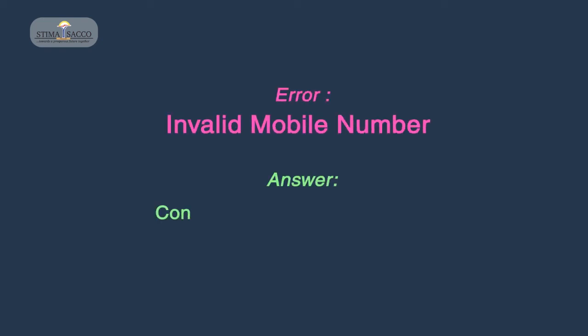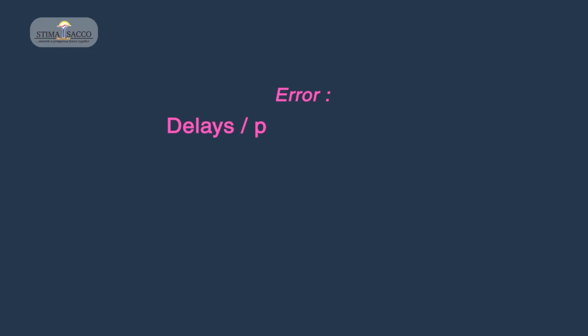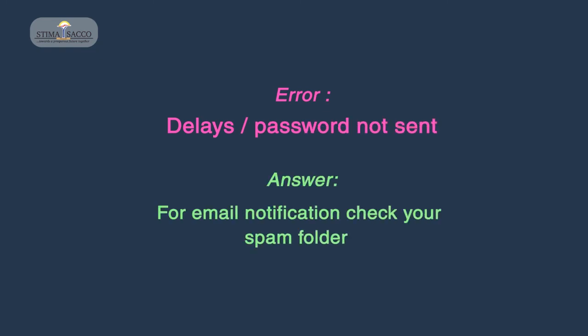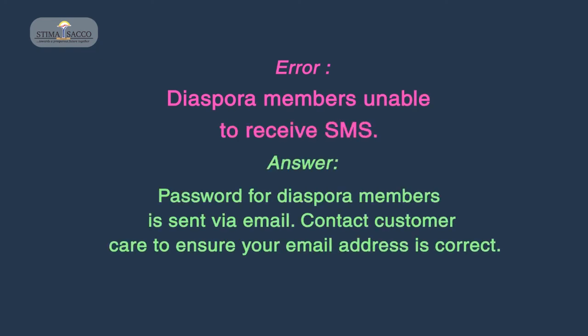For an invalid mobile number, contact Customer Care to confirm your mobile number details as captured in the system are correct. For delays or password not sent, check your spam folder for email notification. For Diaspora members unable to receive SMS, the password is sent via email. Contact Customer Care to ensure your email address is correct.